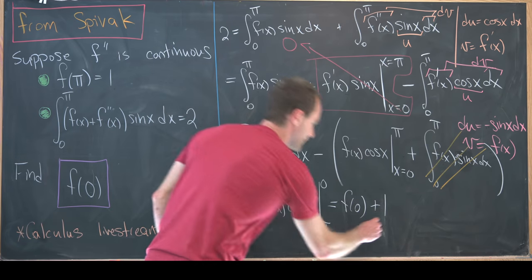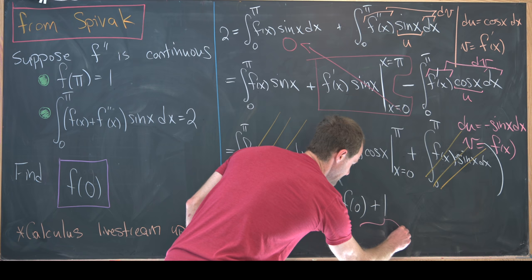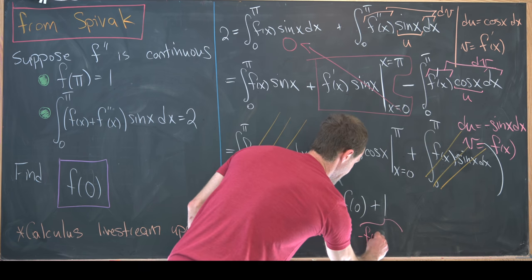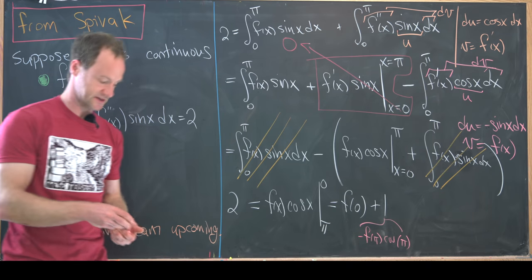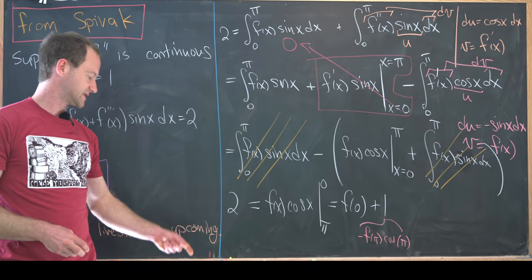Let's just reiterate that this guy right here is minus f(π) times cos(π) where we use the fact that cos(π) is minus one. But let's see what we've got.